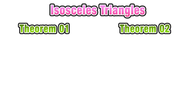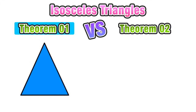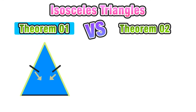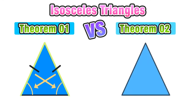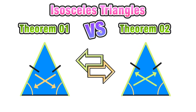We just looked at two important isosceles triangle theorems. Let's visually compare them: Theorem 1 says that if two sides in a triangle are congruent, then the angles opposite them are also congruent. Theorem 2 says that if two angles in a triangle are congruent, then the two sides opposite them are also congruent. It's just a reverse order between the two.